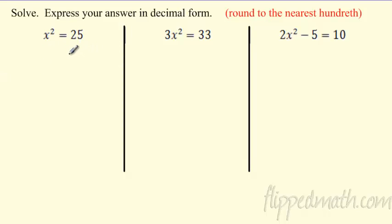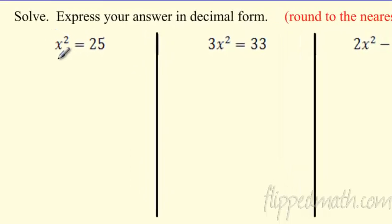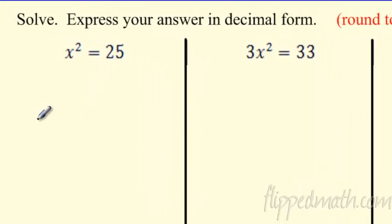So if I want to solve this, this is something you could probably do in your head. You're saying, what number squared is 25? So I can say, oh yeah, no problem. X is what? X is 5. 5 times 5 is 25. But be careful, because what is negative 5 squared? Negative 5 times negative 5 is also 25.